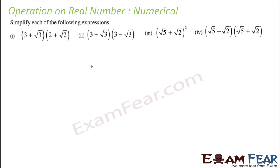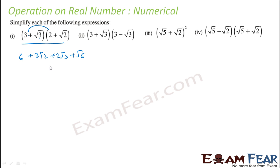Let us take some more questions to simplify each of these expressions. Expanding (3 + root 3)(2 + root 2): 3 into 2 is 6, 3 into root 2 is 3 root 2, root 3 into 2 is 2 root 3, and root 3 into root 2 is root 6. That is the simplified version.